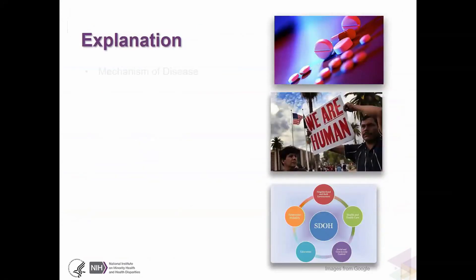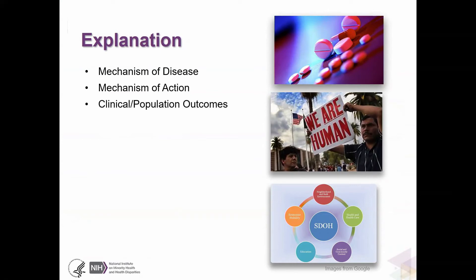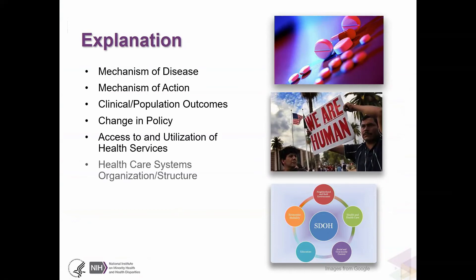If we want to explain, are we going to explain mechanisms of disease — mechanisms of action that could be behavioral, biological, or at the society level? Are we explaining clinical or population outcomes? Are we explaining changes in existing disparities based on changing policy, access to, or utilization of health services? Are we explaining changes in disparities based on changes in healthcare systems, organization, and structure? What about quality of healthcare and quality of life?